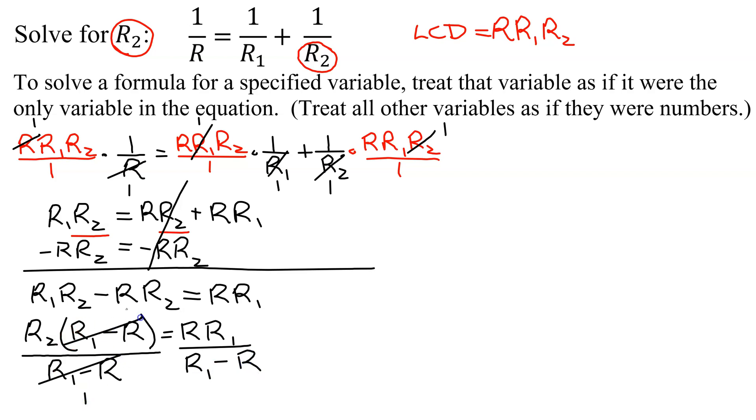So these two reduce, and so we just get left with R2 equals, now, can I reduce anything here? I cannot reduce this R1 with this R1, because this R1 in the denominator is not a factor of the whole denominator. Similarly, we cannot reduce this R with this R. So the answer is just R2 equals R times R1, all divided by R1 minus R. And that is our answer.